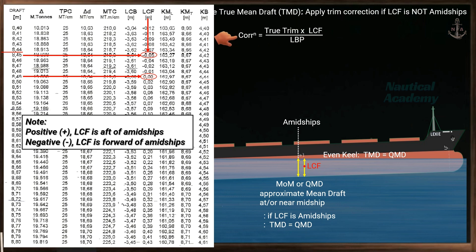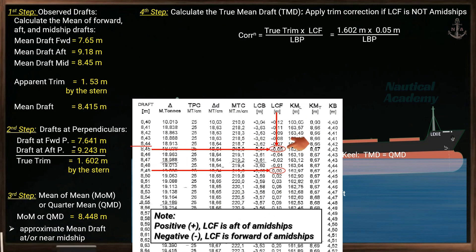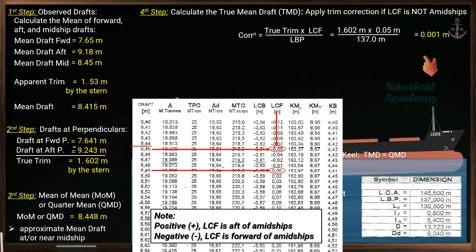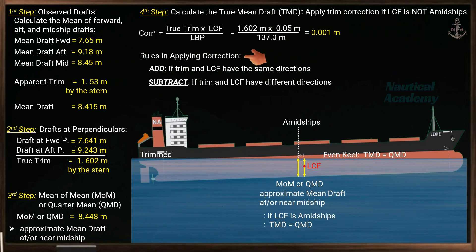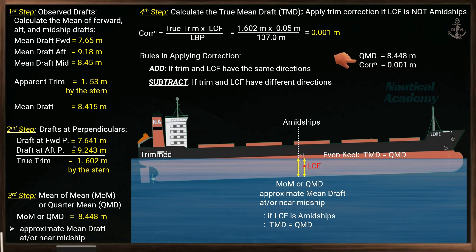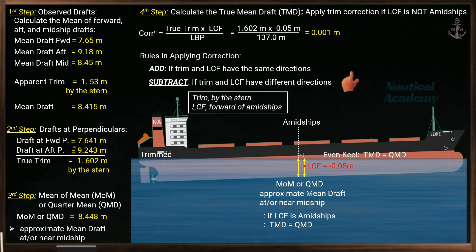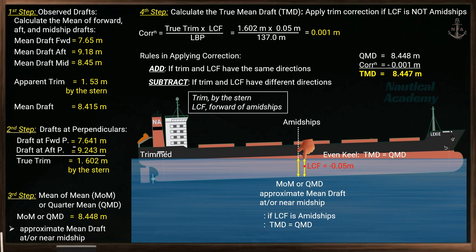The formula for the trim correction is: true trim × LCF ÷ length between perpendiculars. The correction is 0.001 meter. The rule is: add the correction if the trim and LCF have the same direction; subtract if they have different directions. In our scenario, the trim is by the stern and the LCF is forward of amidships — different directions — so the correction is subtracted. The true mean draft is 8.447 meters. This is the mean draft along the LCF, a very slight difference from the quarter mean draft because the LCF is almost amidships.